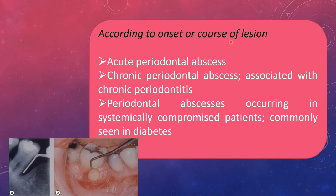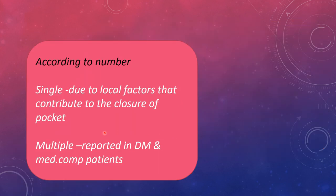According to onset or cause, it can be acute periodontal abscess, chronic periodontal abscess associated with chronic periodontitis, or periodontal abscesses occurring in systemically compromised patients — commonly seen in diabetic patients. According to number, it is classified into single and multiple. Single abscesses are due to local factors contributing to pocket closure, whereas multiple abscesses are mostly reported in diabetes mellitus and medically compromised patients.